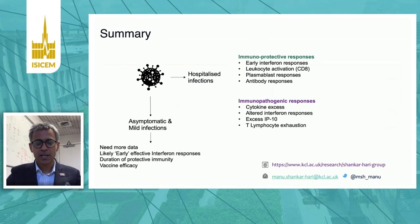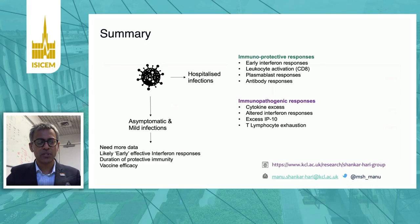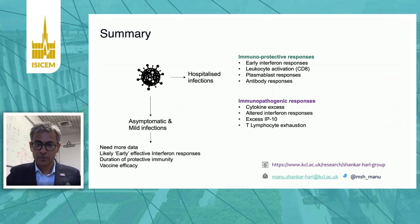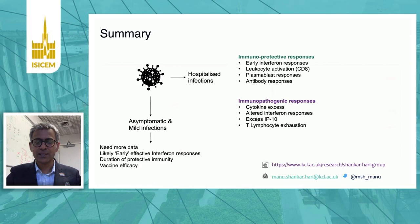To summarize: the majority of COVID-19 infections are mild or asymptomatic, and we have limited data in this population. Immunoprotective responses include early type 1 interferon responses, CD8 leukocyte activation to kill the virus, early plasmablast response, and antibody responses. Immunopathogenic responses include cytokine excess, altered interferon response, excess IP-10, and lymphocyte exhaustion. Thank you very much.